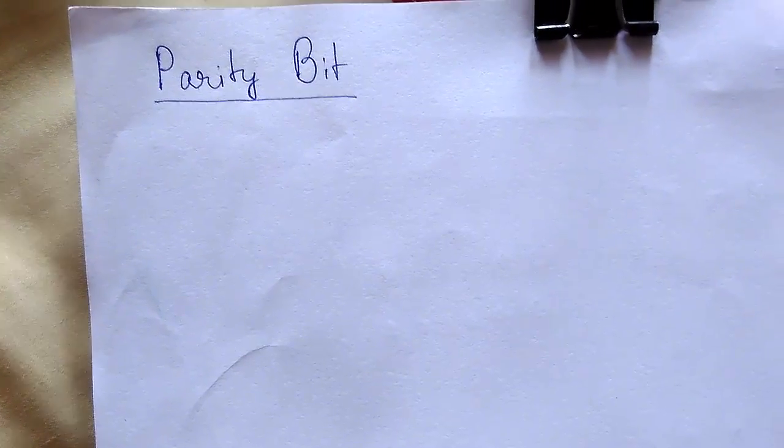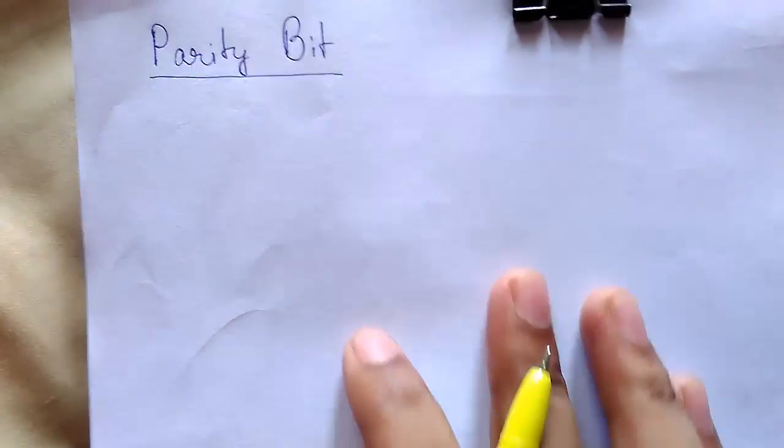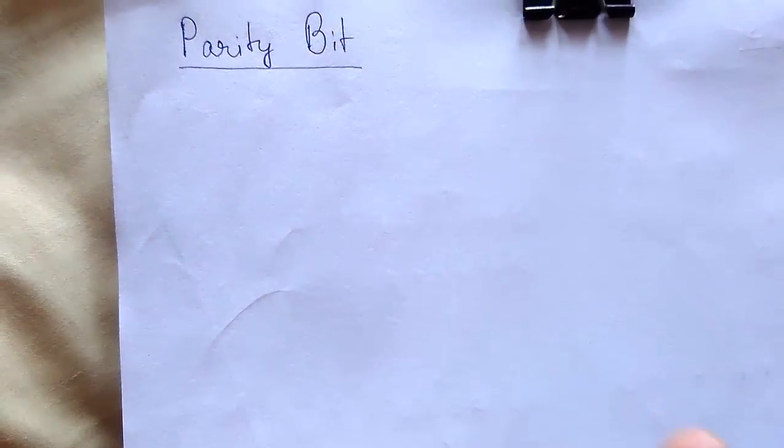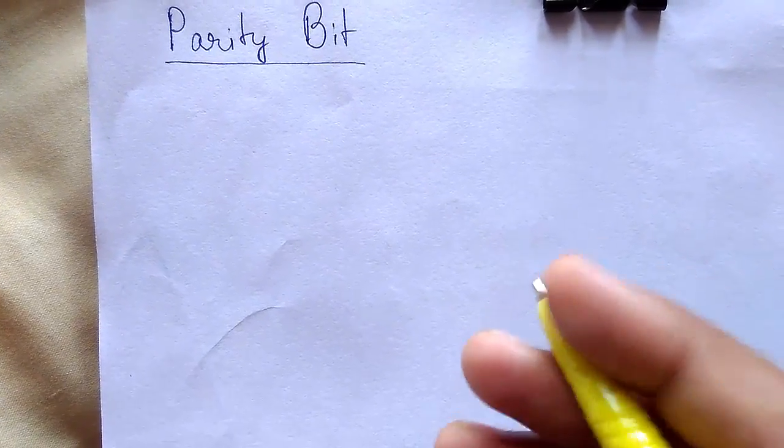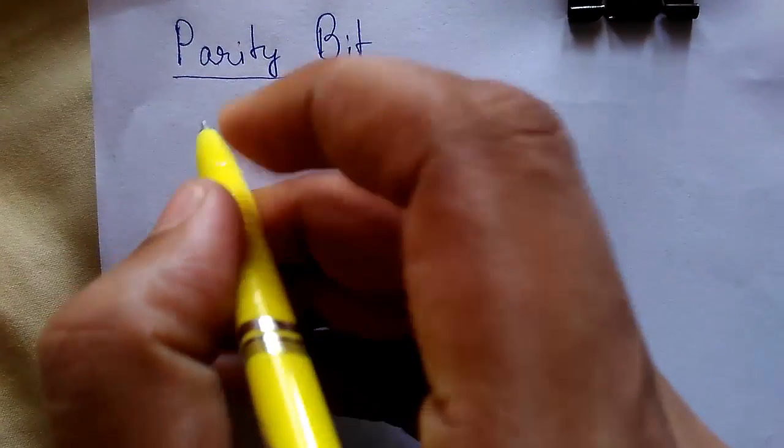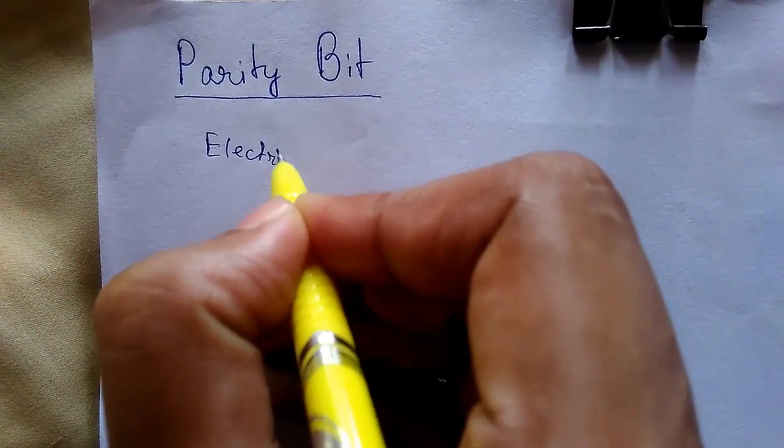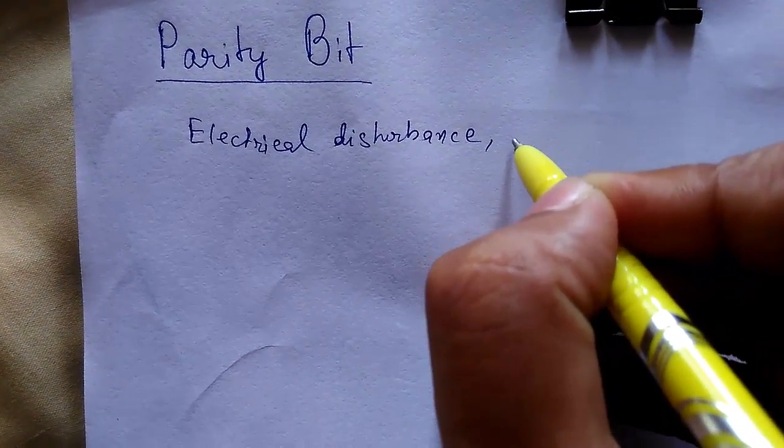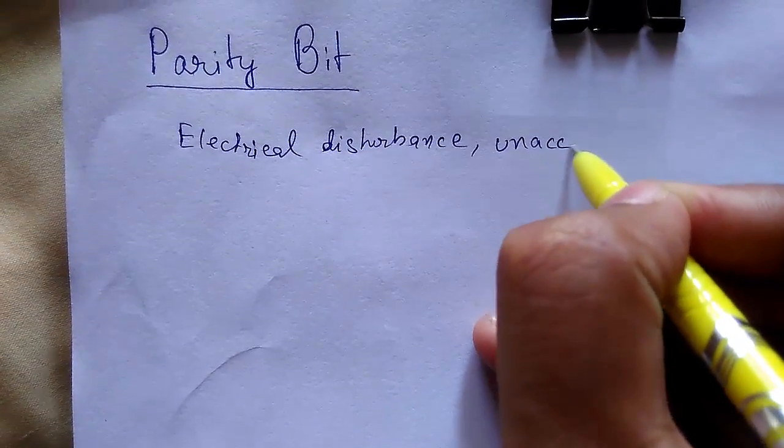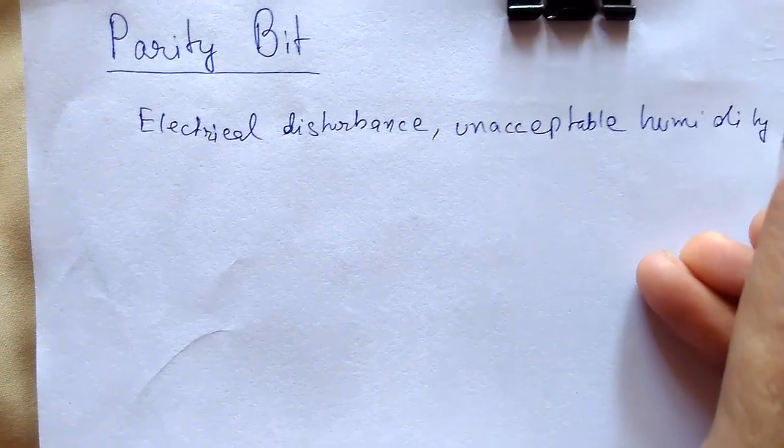Welcome back guys, today we will be studying parity bit. During transmission of data from one system to another system, suppose you take an 8-bit data. If the data is lost, an incorrect code will be received at the receiving end. This data can be lost due to errors like electrical disturbance during transmission, unacceptable humidity, or dust particles on storage media.